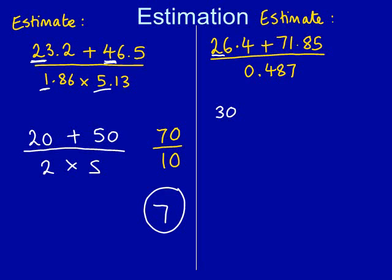The first number is 26.4. I've underlined the significant figure, the 2. The next number is a 6, so we round the 2 up to a 3, and the rest is 0. So 26.4 becomes 30. The next number is 71.85. I've underlined the first significant figure, the 7. The next number is a 1, so we do not round up. We just keep it the same, so 71.85 becomes 70.